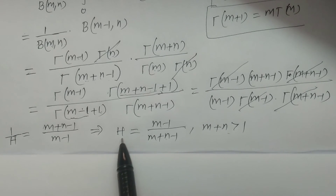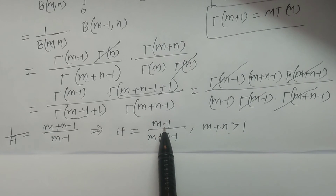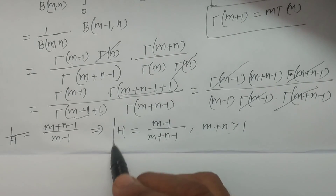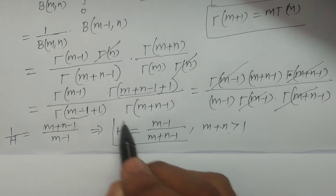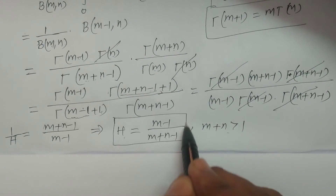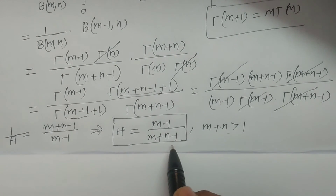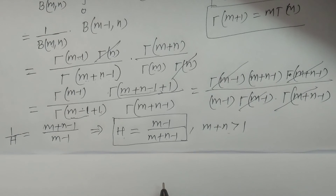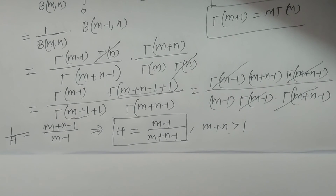So the harmonic mean h is equal to m minus 1 divided by m plus n minus 1. This is the harmonic mean of the beta distribution of first kind. Thank you.